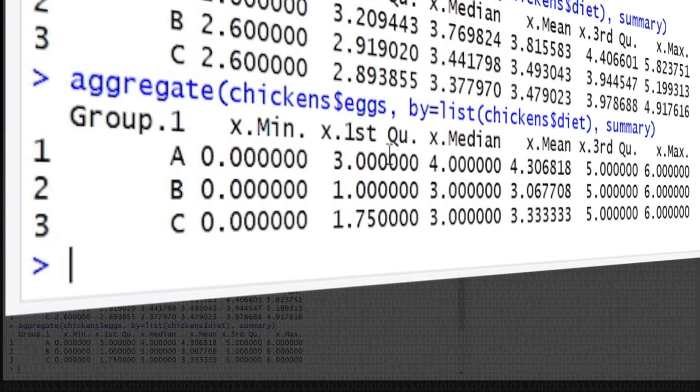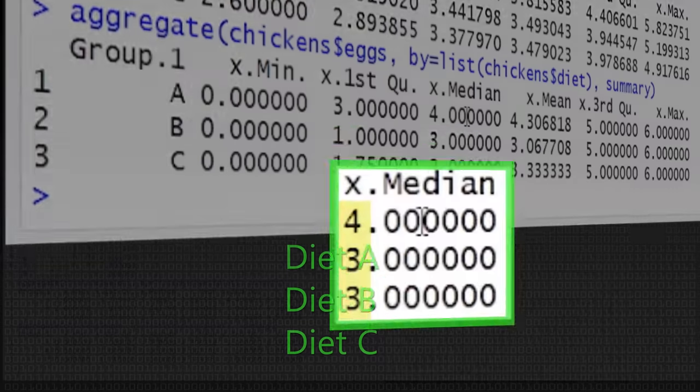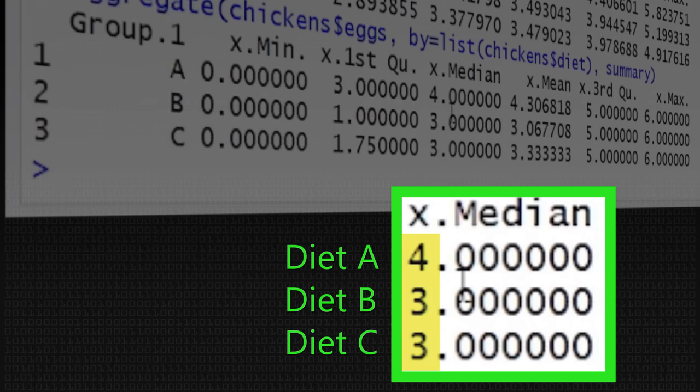Okay, so let's try a different aggregate function. So this time, we're going to aggregate the number of eggs produced, grouped by, again, the diet. So this is going to be all the A's, all the B's, and all the C's, and then we're going to produce a summary. So we can see that the median number of eggs produced for group A is 4 per week, and for group B and group C, it's 3 per week. So maybe, again, there's a slight difference. We're starting to learn a little bit about our data.